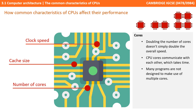CPU cores have to communicate with each other. The more cores you have, the more communication needs to take place to keep everything in sync, and this costs time and efficiency. On top of this, many programs are simply not designed to make maximum use out of multiple cores.